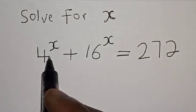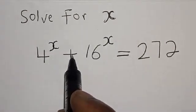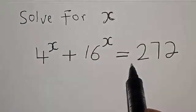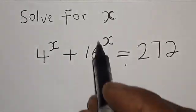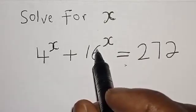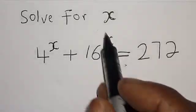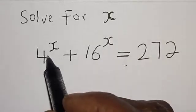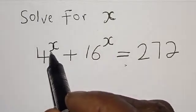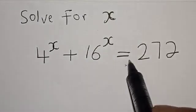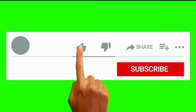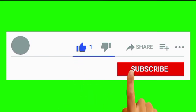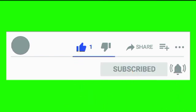For x: 4 raised to power s plus 16 raised to power s is equal to 272. Hi everyone, welcome to my class. In this class we want to find the value of s from this given equation: 4 raised to power s plus 16 raised to power s is equal to 272. But before we proceed, please don't forget to like, share, comment and subscribe. Thank you. Solution.